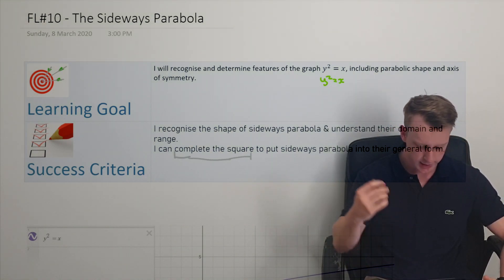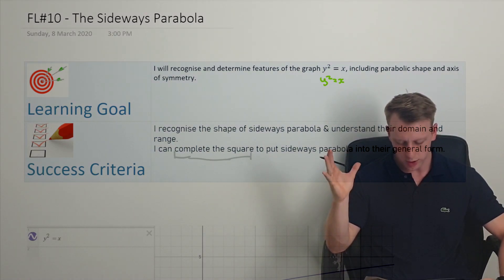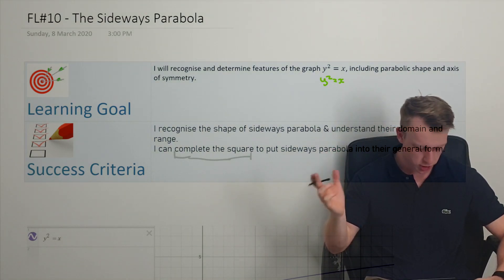By the end of it, we want to be able to recognize the shape of the sideways parabola and understand the domain and range. And we also want to be able to complete the square, again, similar to the circle. We're completing the square, that's our algebraic technique to put the parabola, the sideways parabola, into its general form.